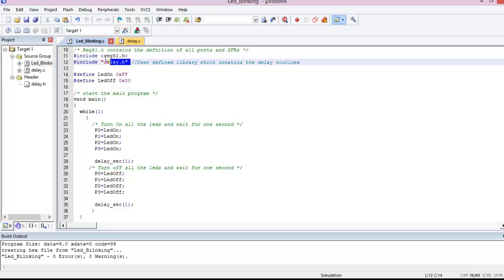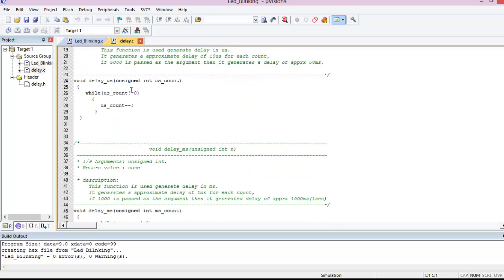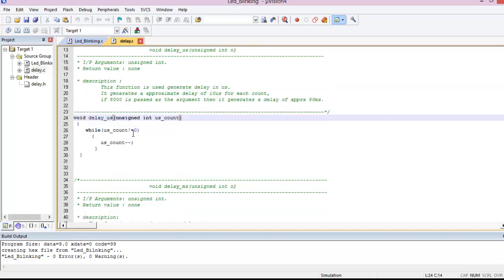The second line, we have written a custom delay routine. This routine generates delays in microseconds. delay_us generates a delay in microseconds. This particular function generates a delay of 10 microseconds for each count that we give. On 8051, we cannot do anything less than this. If the input to this function is one, it generates a delay of 10 microseconds.